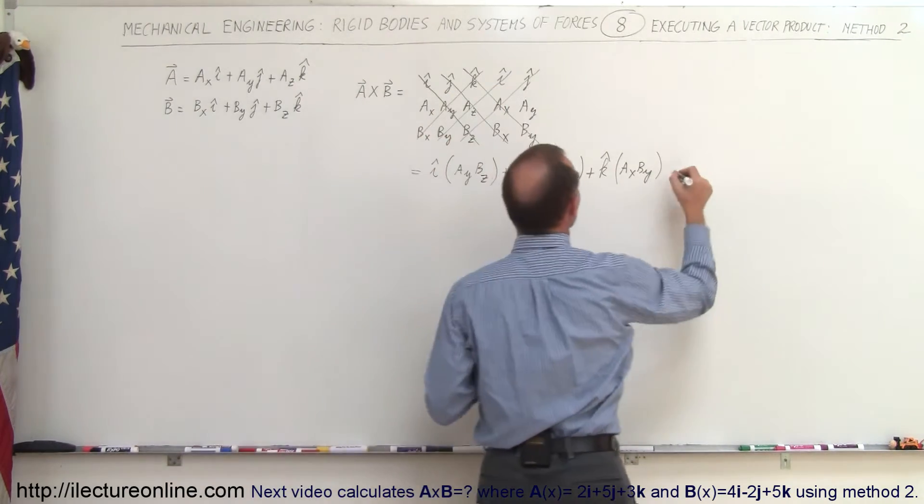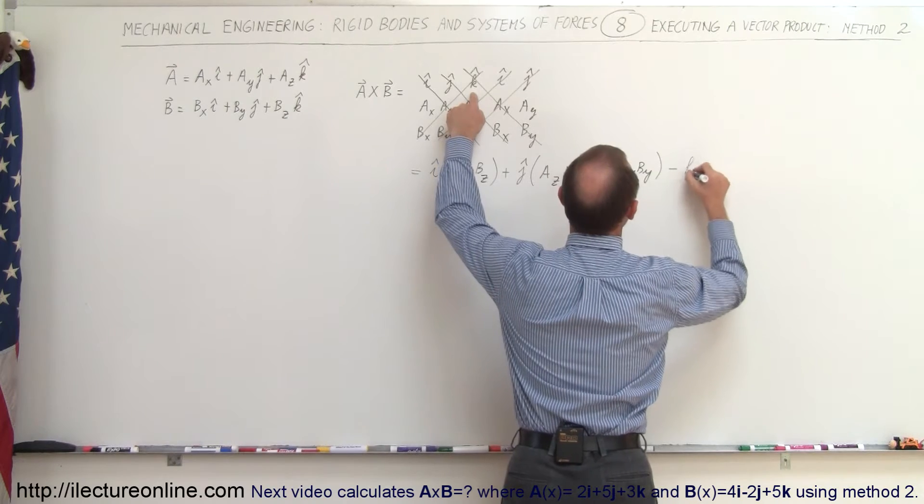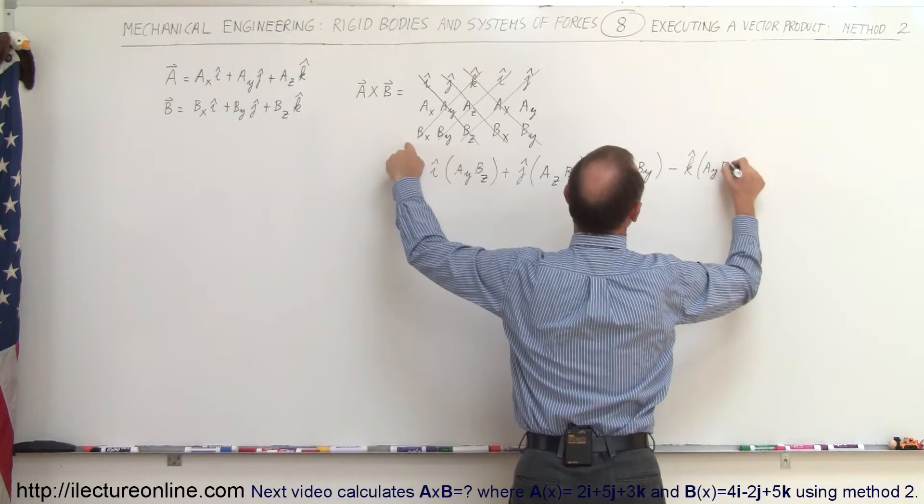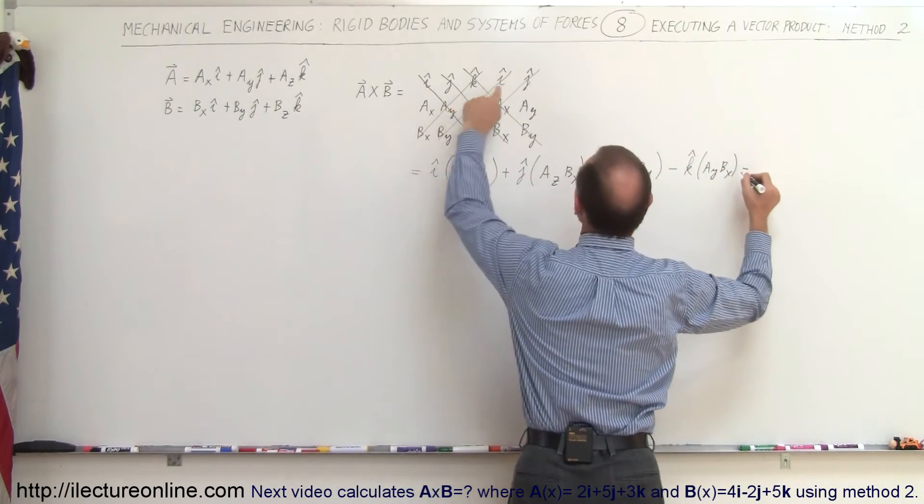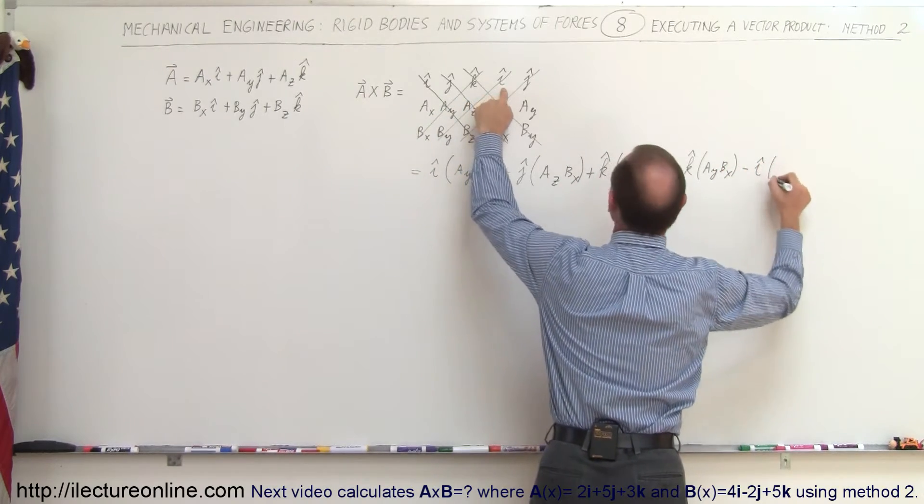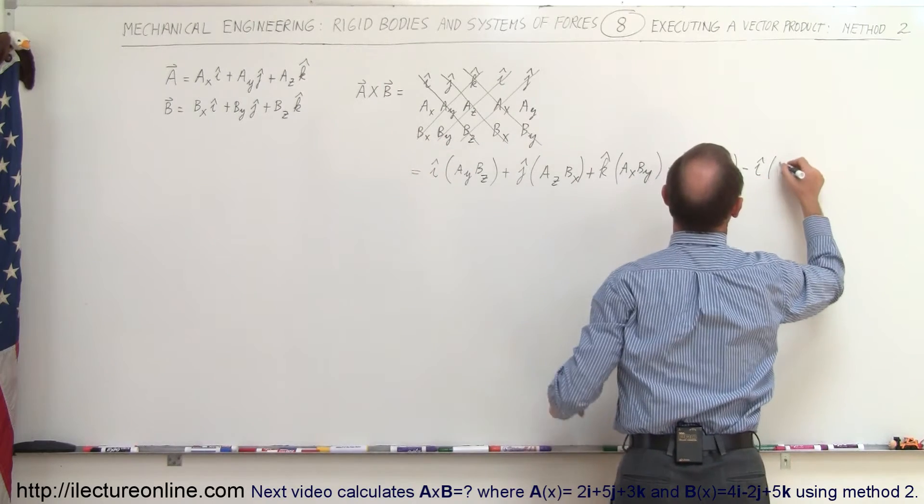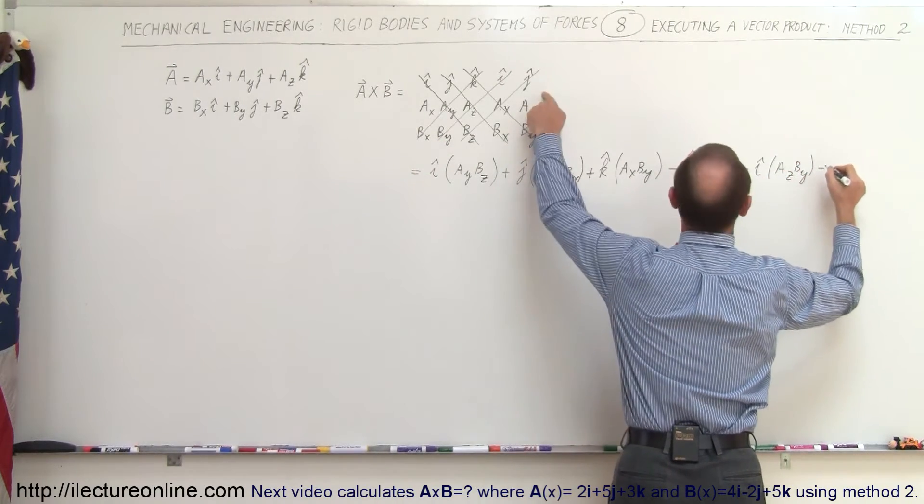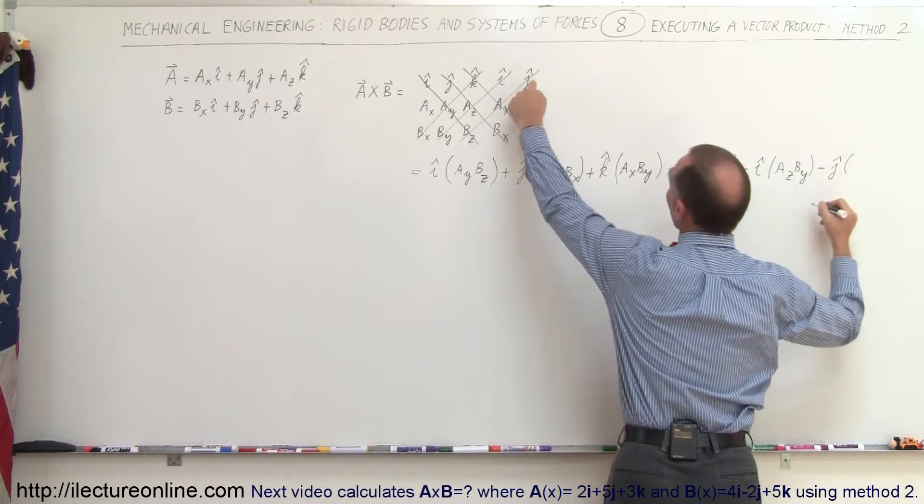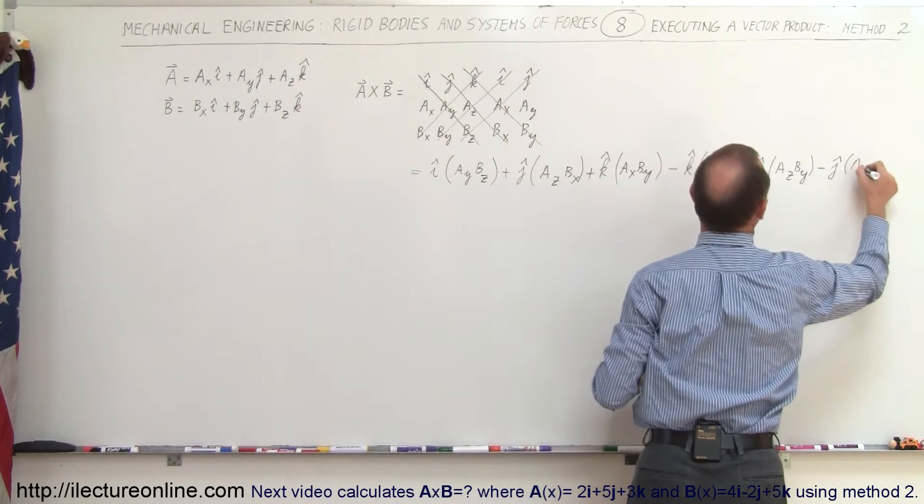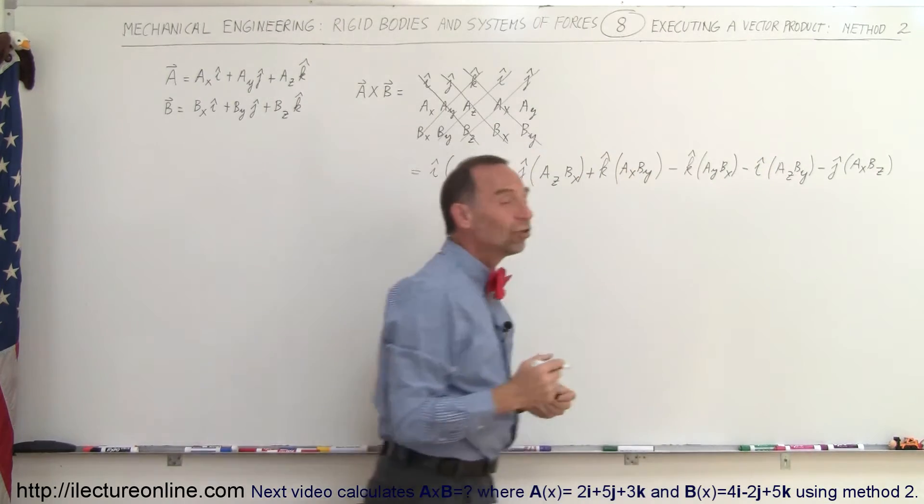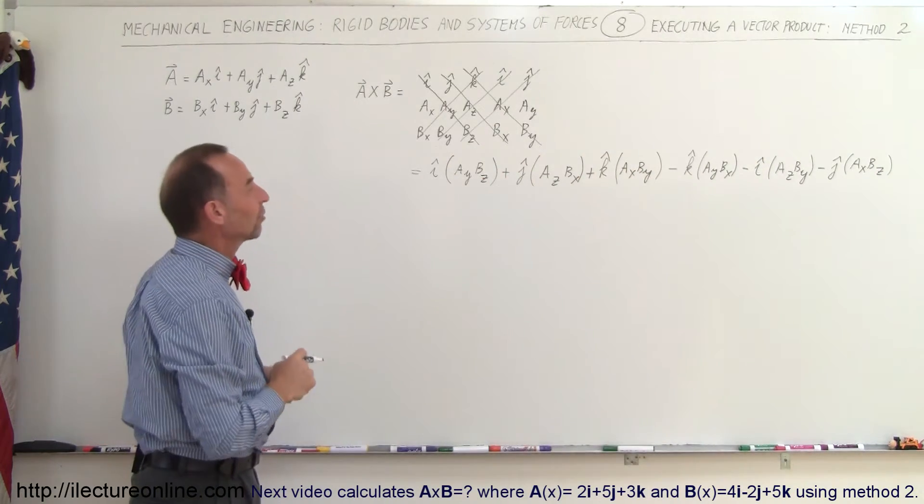That would be minus K times A sub Y B sub X, minus I times A sub Z B sub Y, A sub Z B sub Y, and minus J times A sub X B sub Z. And when we do that we should get the exact same result as before.